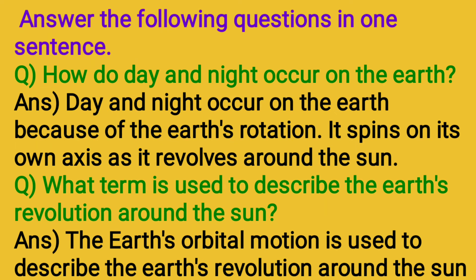Answer the questions in one sentence. Question: How do day and night occur on the Earth? Answer: Day and night occur on the Earth because of the Earth's rotation.